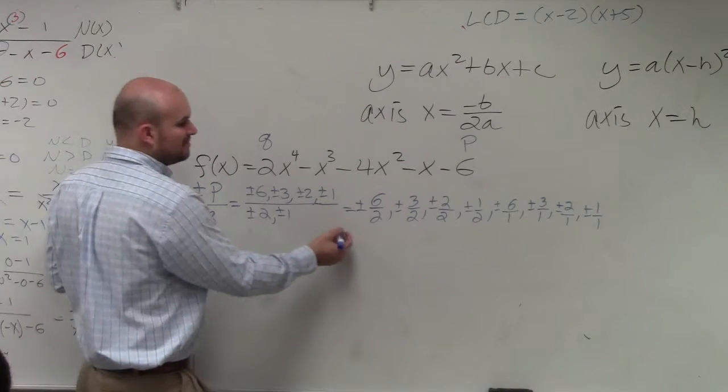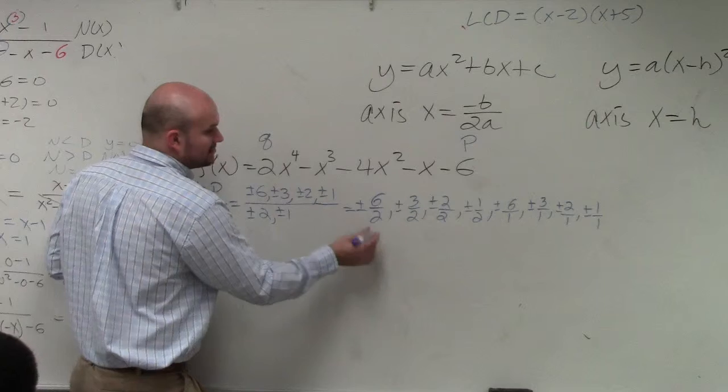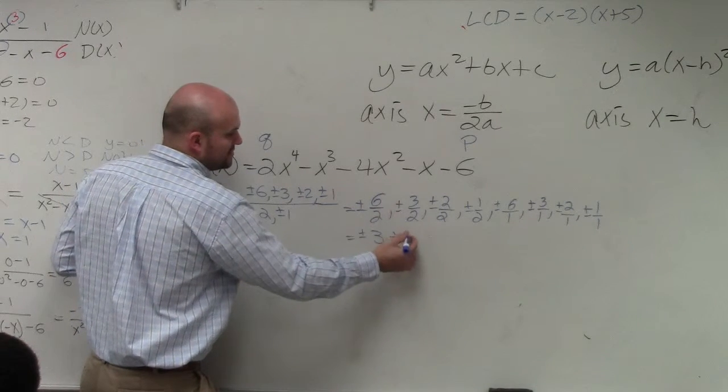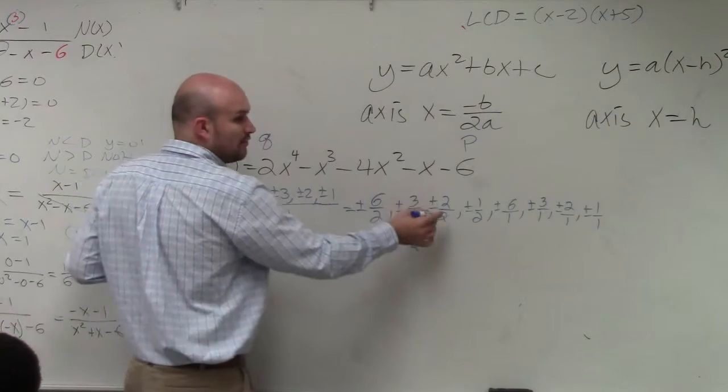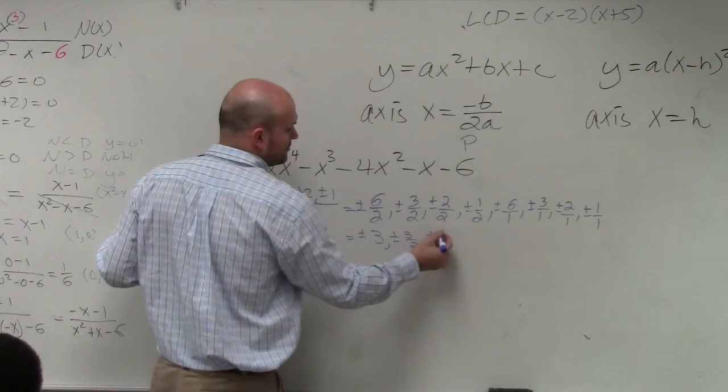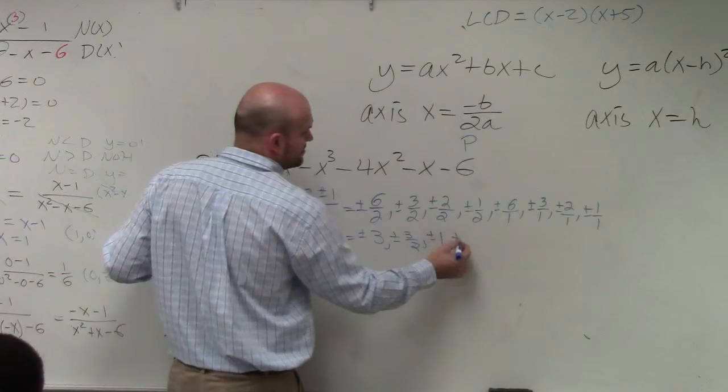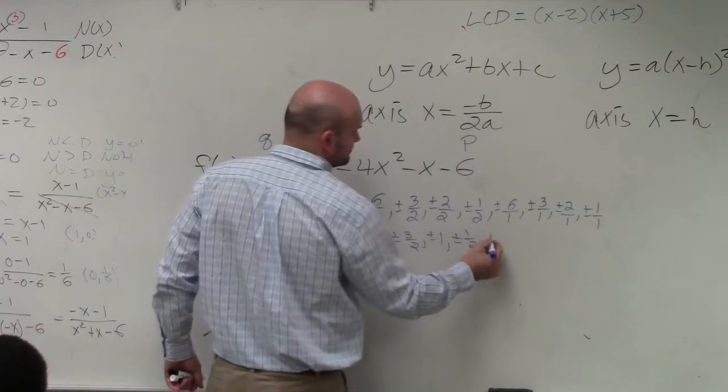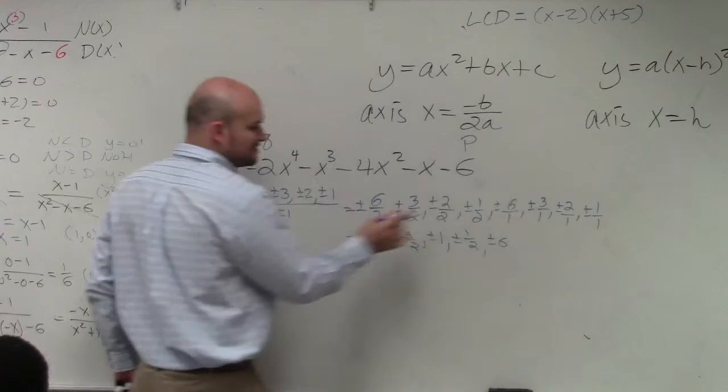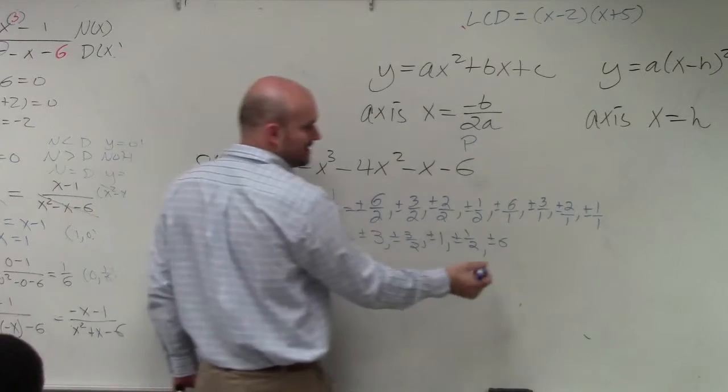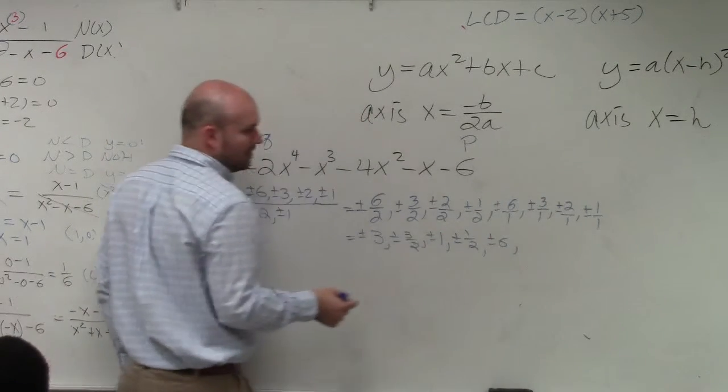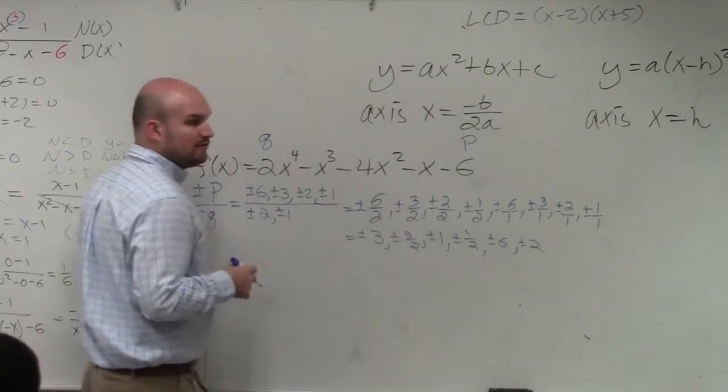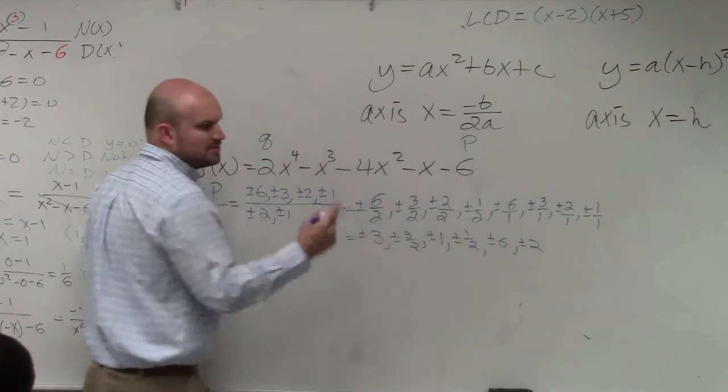Now, like Sven said, you can simplify them. So 6 over 2 is 3. Plus or minus 3 over 2 will leave. 2 over 2 is just 1, plus or minus 1 half, plus or minus 6. 3 over 1 is 3, but we already have 3, so I'm not going to rewrite that. 2 over 1 is just going to be 2. And then plus or minus 1 over 1 is just 1, but we already have 1, so I'm just going to leave that out.